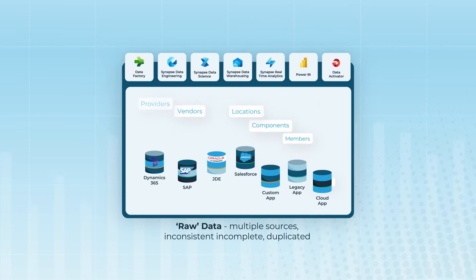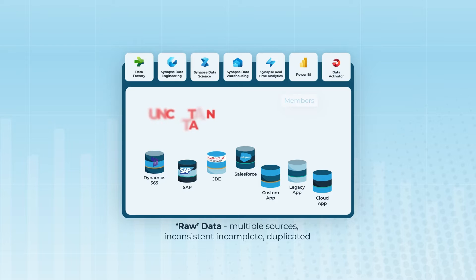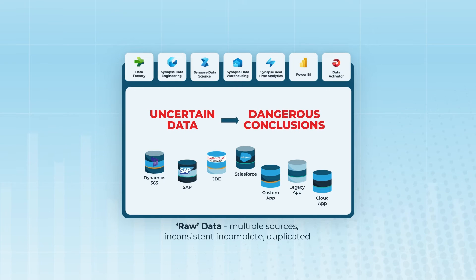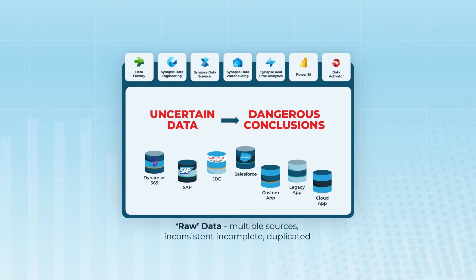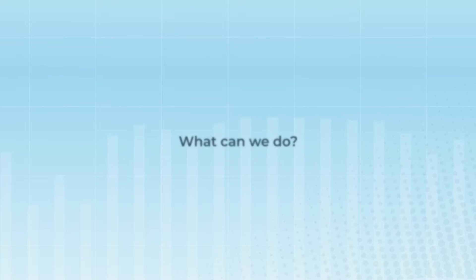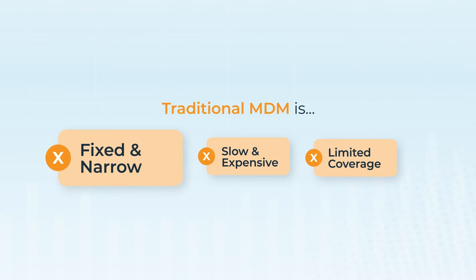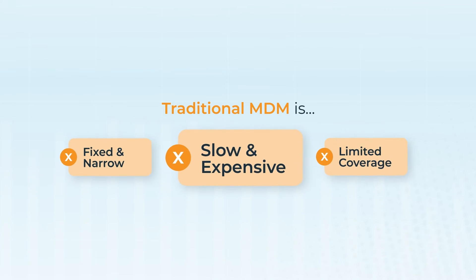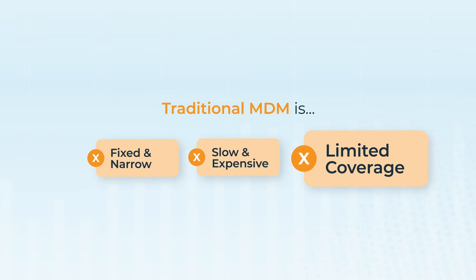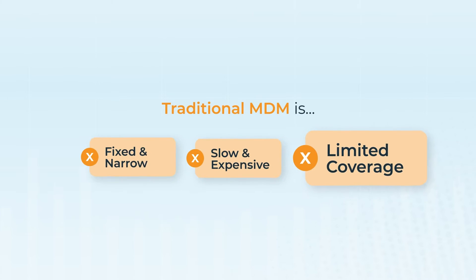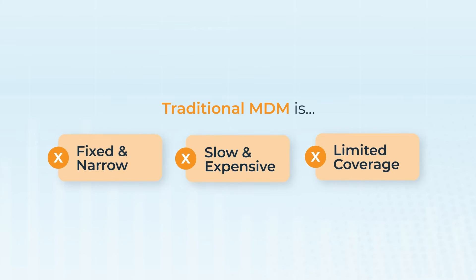Any data that is not properly matched and standardized across sources risks incorrect interpretation. And that is especially true with AI, where the lineage between source and output can be lost in the process. So what can we do? That's where master data management comes in — but not the traditional MDM solutions that can be fixed and narrow in their approach, which means they are generally slow and expensive to implement and result in limited coverage. That would not be a good partner to Microsoft Fabric.